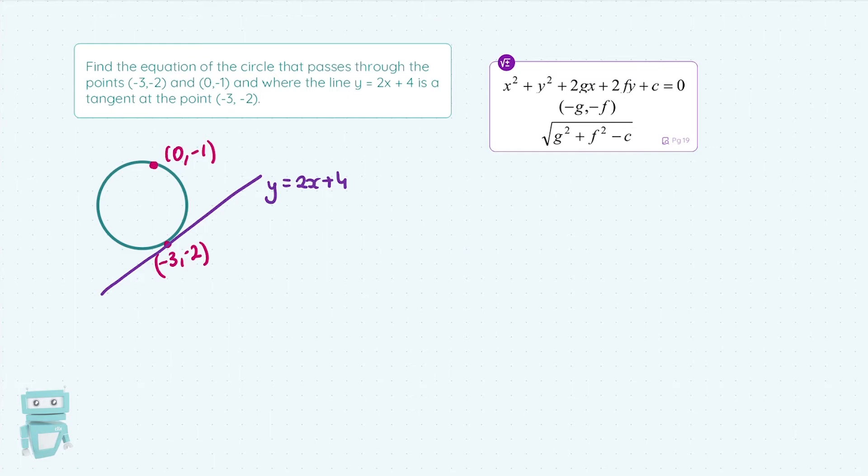Now, on page 19, they give us the equation of a circle, the general equation of a circle: x² + y² + 2Gx + 2Fy + C = 0. This bit below, which it tells you in the formula book as well, stands for my center. And the bottom bit stands for my radius.